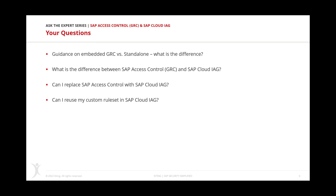Regarding the rule set — many questions asked whether you can reuse it. Yes, you can for the on-premise world. If you have a custom rule set, or if you've modified the standard rule set, you can reuse it in IAG for on-premise systems. If you have data in Access Control and analyze your S/4HANA, you can repurpose that rule set in IAG — there are upload and download capabilities to bring it in. For cloud solutions like SuccessFactors, Ariba, and Analytics Cloud, you need to build new rules specifically for IAG.